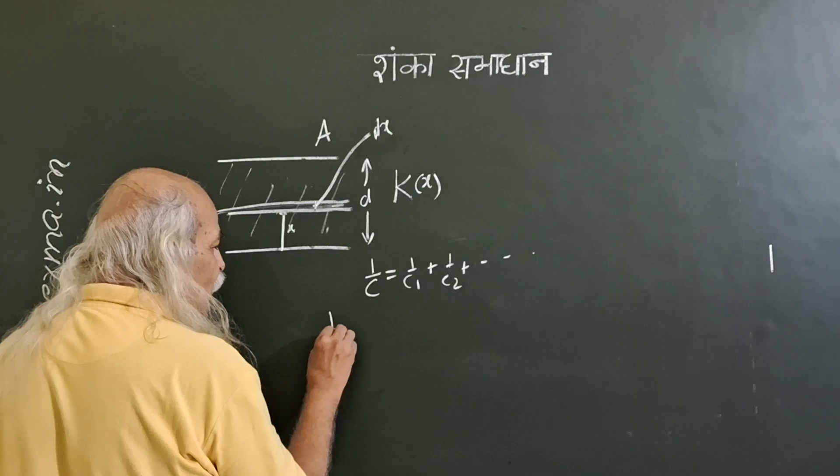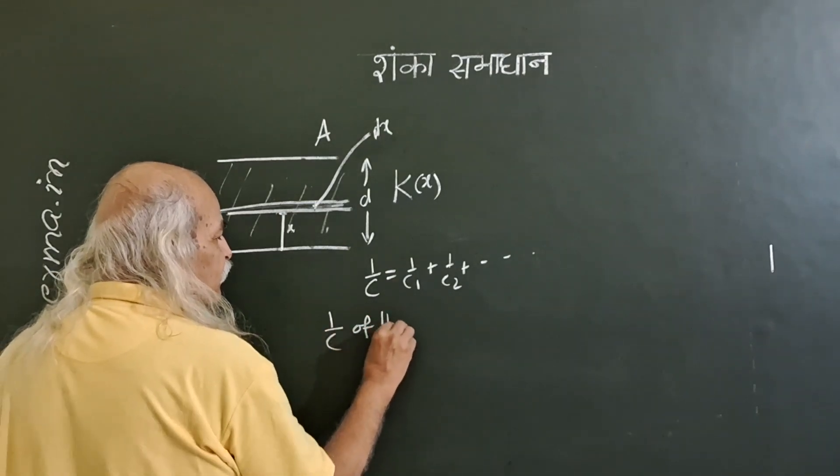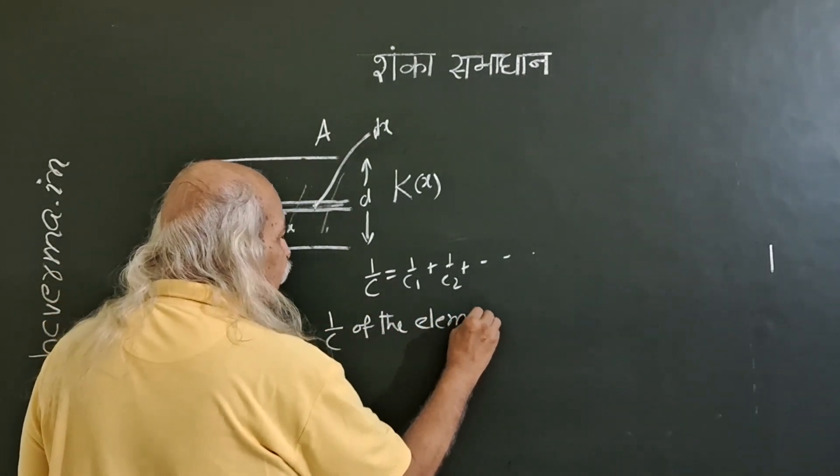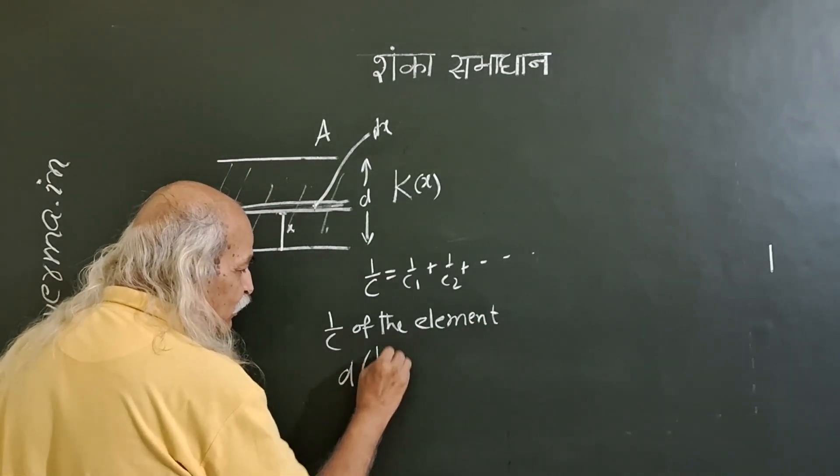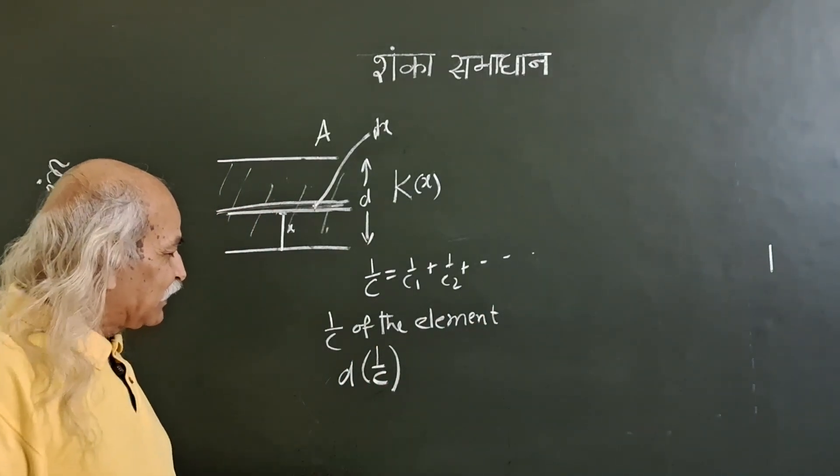So this 1 by c of the element, small element, we will call it d of 1 by c. So here is the problem Karthik is saying.